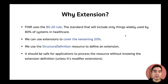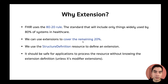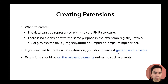Let's recap briefly. Why do we need an extension? Because FHIR uses the 80-20 rule — the standard includes only things widely used by 80% of systems in healthcare. So what do we do with the remaining 20%? That is the role of extensions. We define an extension by creating a StructureDefinition resource, the same resource FHIR uses to define all other base resources and profiles. If an application receives a resource with an extension it doesn't understand, it should be safe to process that resource without knowing the extension definition — unless it's a modifier extension, which I'll cover in this session.